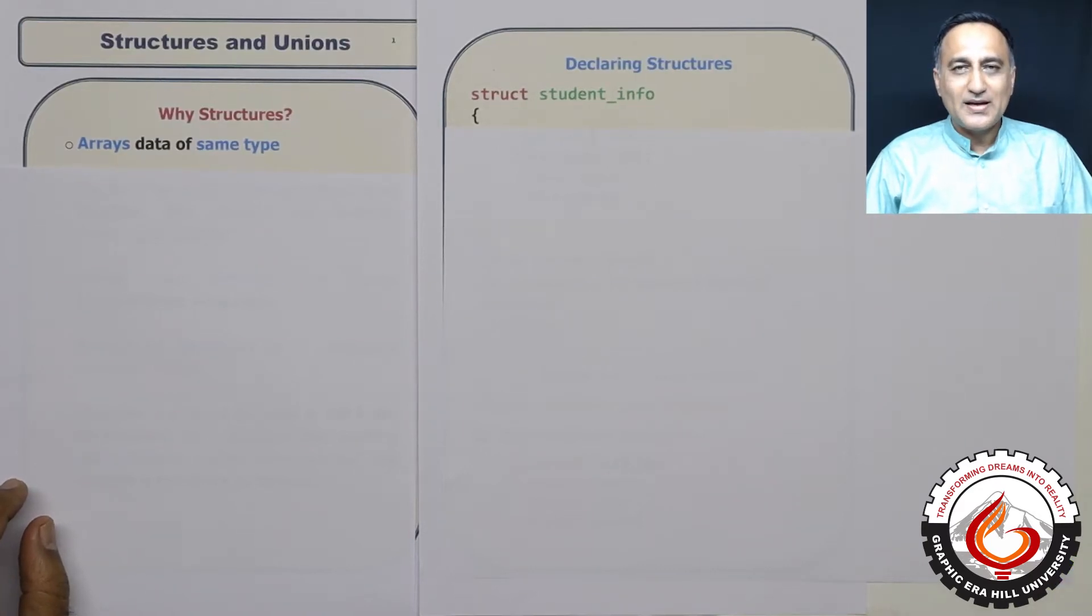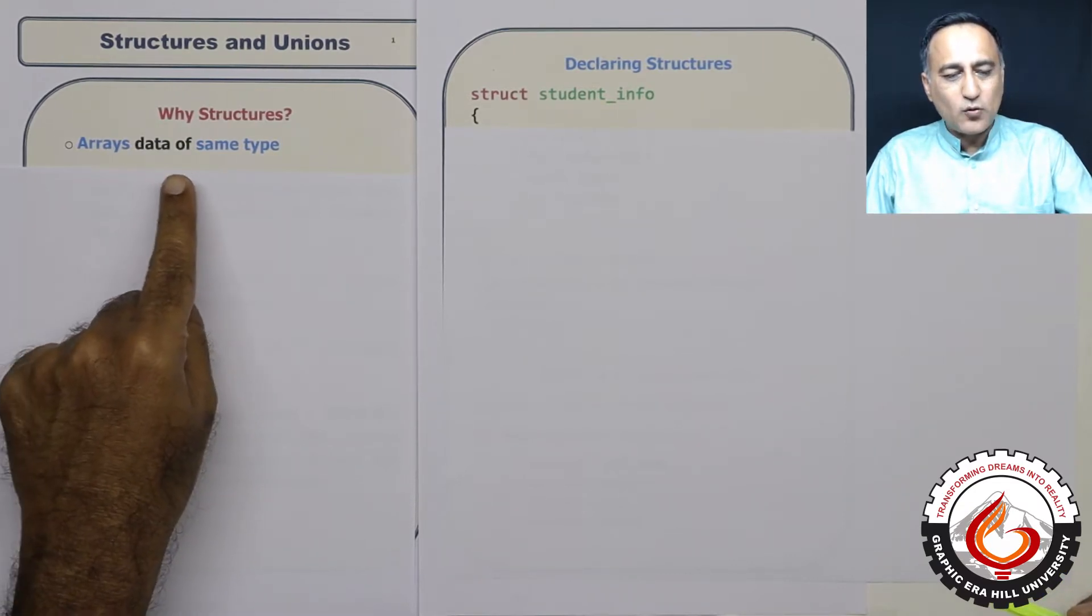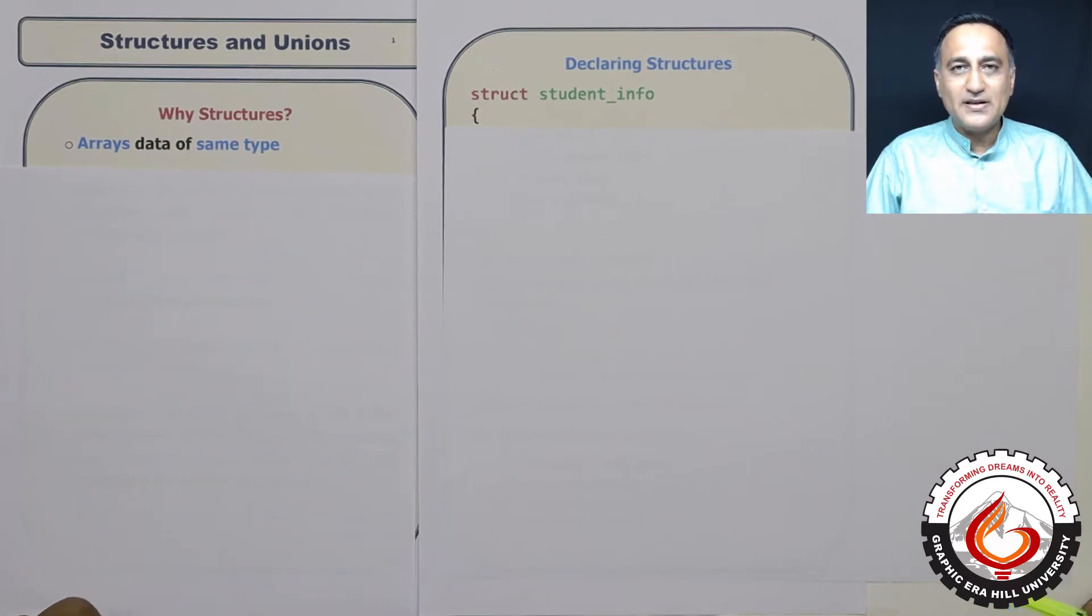We have spoken about only arrays as the data structure we can define and create. Arrays are great, but they have a small problem because arrays can only store data of the same type.